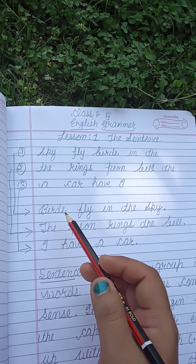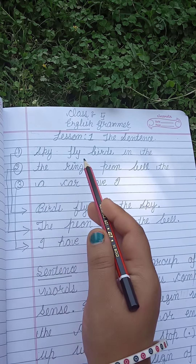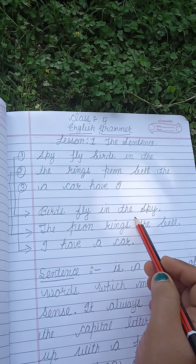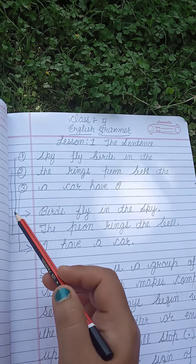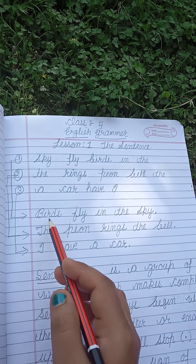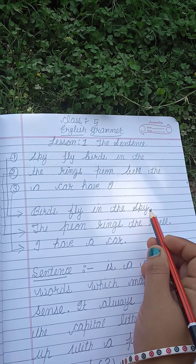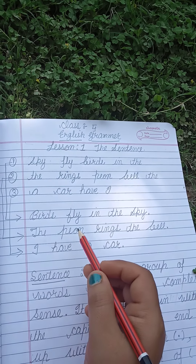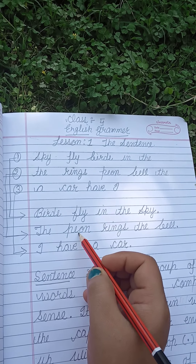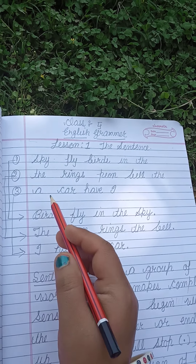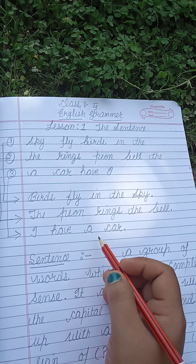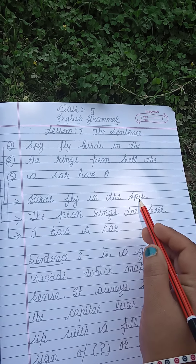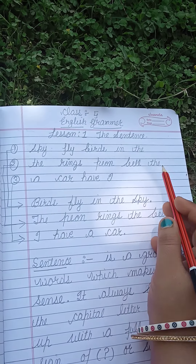Now see these same words rearranged. 'Sky fly birds in the' becomes 'Birds fly in the sky.' Yaha pe sense ban rahi hai — is there any sense? Yes! 'Birds fly in the sky.' Second: 'The pen rings the bell' — here there is sense. Third: 'I have a car' — there is also sense in these group of words. So these are called sentences.